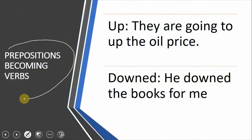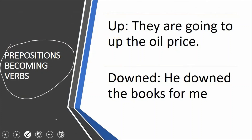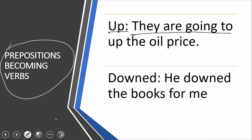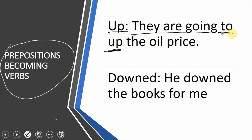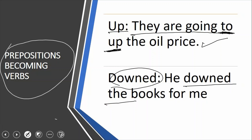اب ہم دیکھتے ہیں prepositions becoming verbs۔ Up جو ہے وہ ایک preposition ہے، لیکن ہم یہ بھی کہہ سکتے ہیں they are going to up the oil price — یہاں up as a verb use ہوتا ہے۔ اسی طرح down: he downed the books for me — اس نے میرے لئے کتابیں نیچے اتاری۔